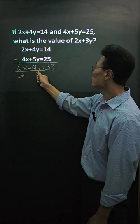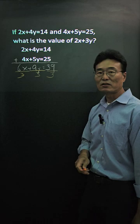Then, of course, I need to divide the right side by 3 as well. Then we get 2x plus 3y, which is what we wanted, equals 13.